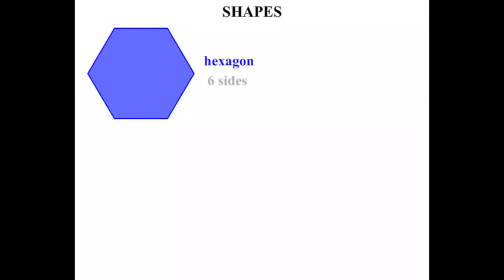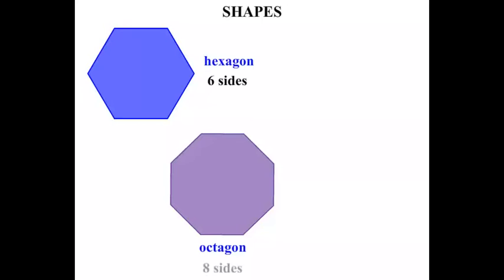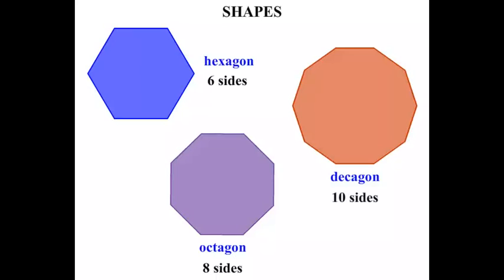A hexagon has six sides. An octagon has eight sides. A decagon has ten sides.